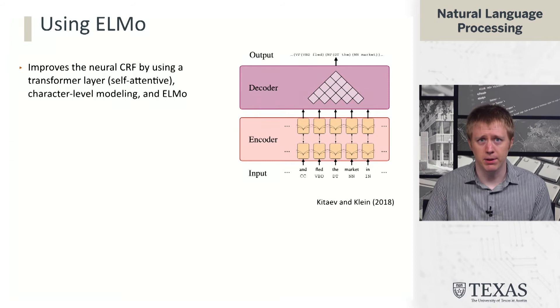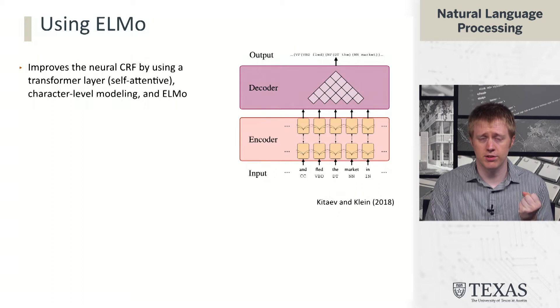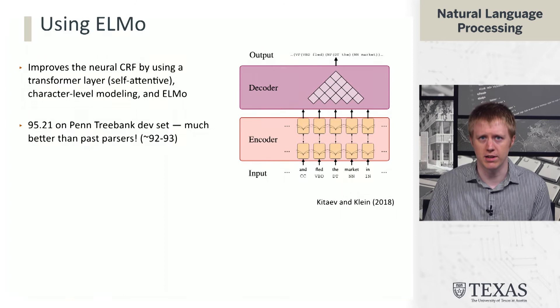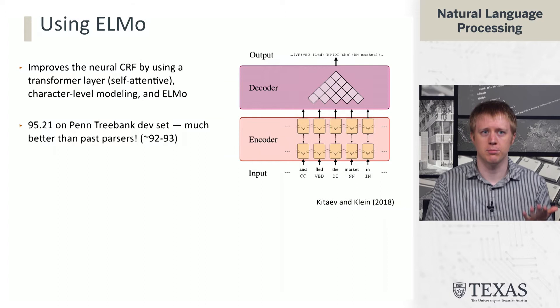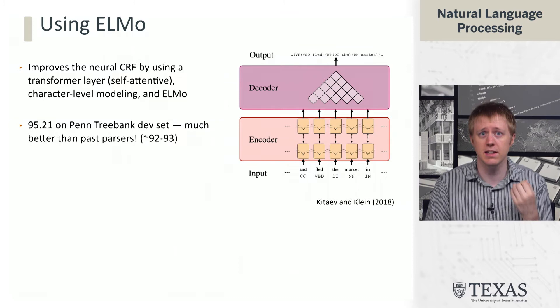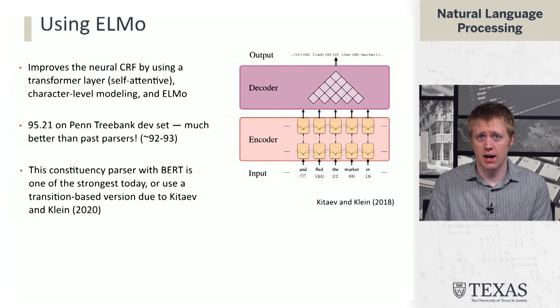This is a standard template for building these kinds of parsers. More recent work has used pre-trained models — for example, Kitaev and Klein used ELMo to produce word embeddings, fed them into an encoder, and used the same CKY-style decoder to produce trees. The scores they get are 95.2 F1 on the Penn Treebank development set. Previously, lexicalized parsers were getting around 89, and parsers prior to 2018 had been getting around 92–93, so this was a big jump in accuracy. There's a version with BERT as well as a transition-based version — these are the best constituency parsers we have today.